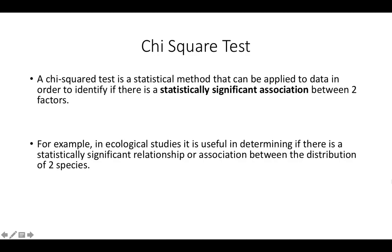Hi everyone. In this video we're going to work through an example of how to use the chi-square test. The chi-square test is a statistical method that can be applied to data in order to identify if there is a statistically significant association between two factors.